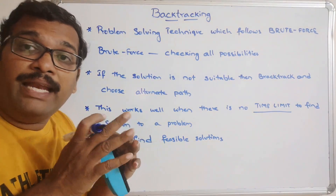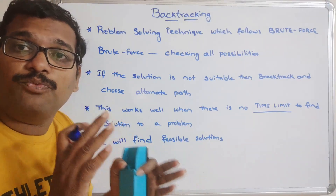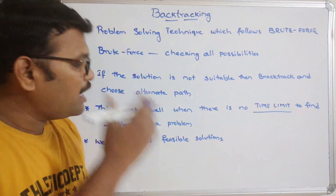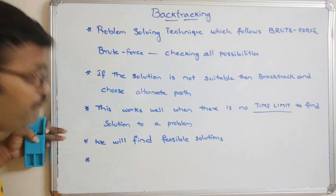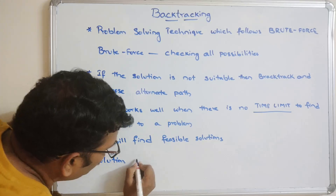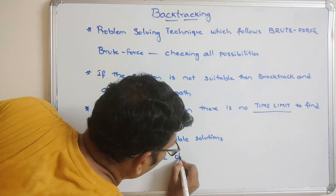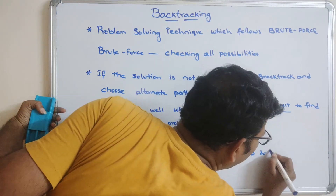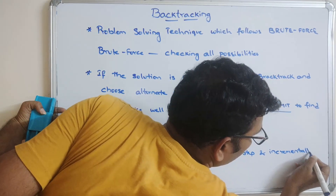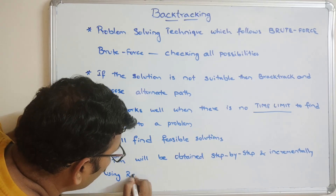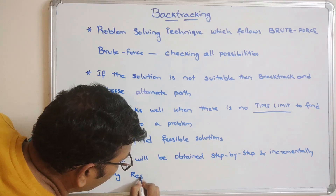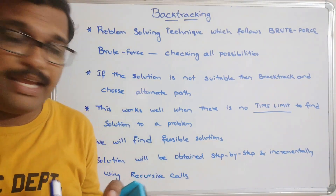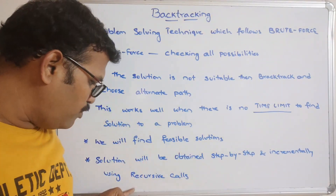One problem can have many solutions, but based upon the constraints we are supposed to select the optimal solution. All possible solutions are called feasible solutions. The solution for a problem will be obtained step by step in an incremental way using recursive calls — this is also very important.